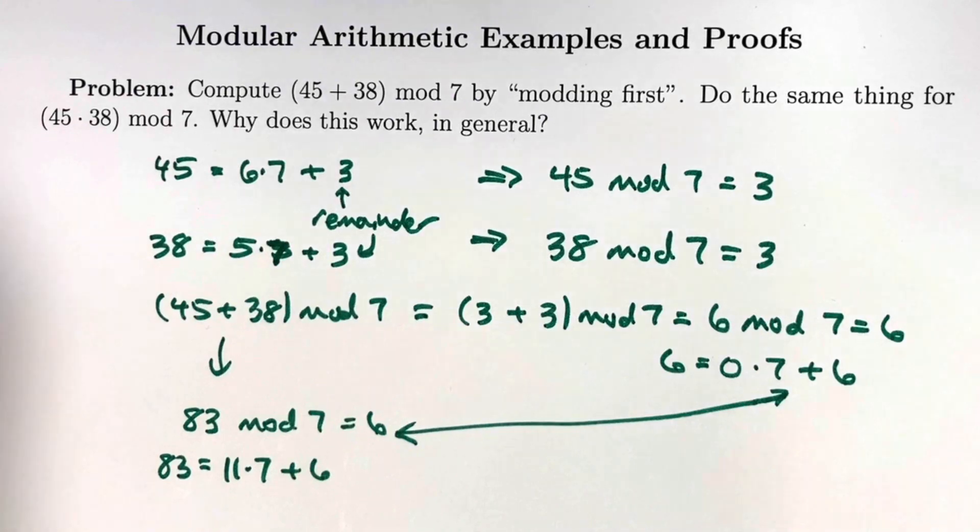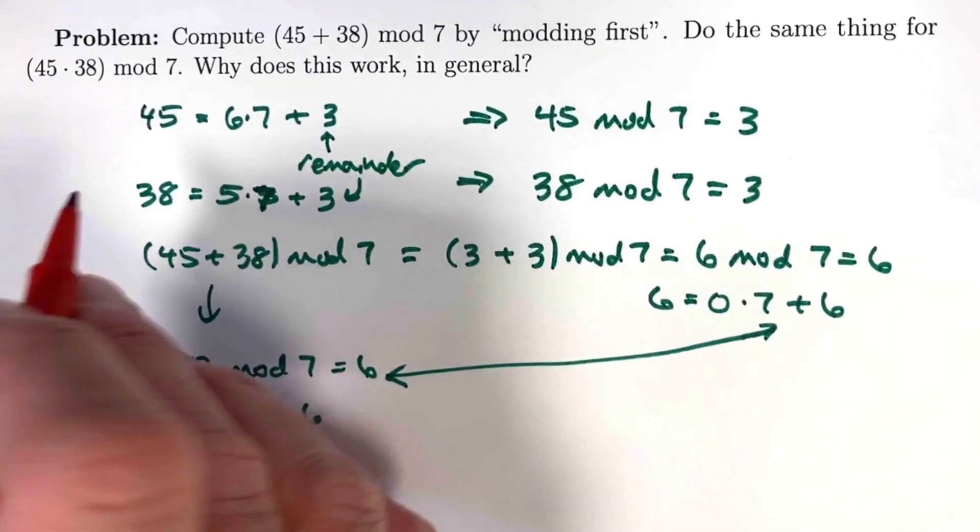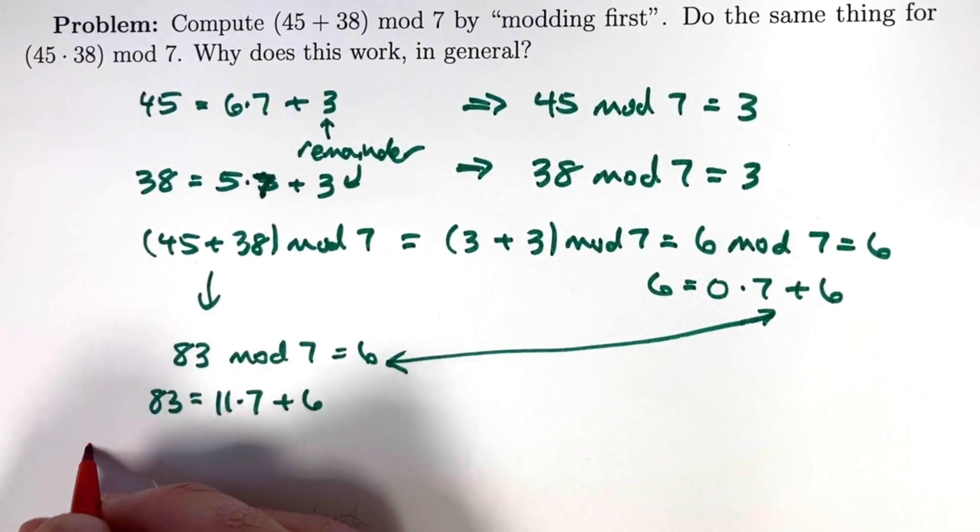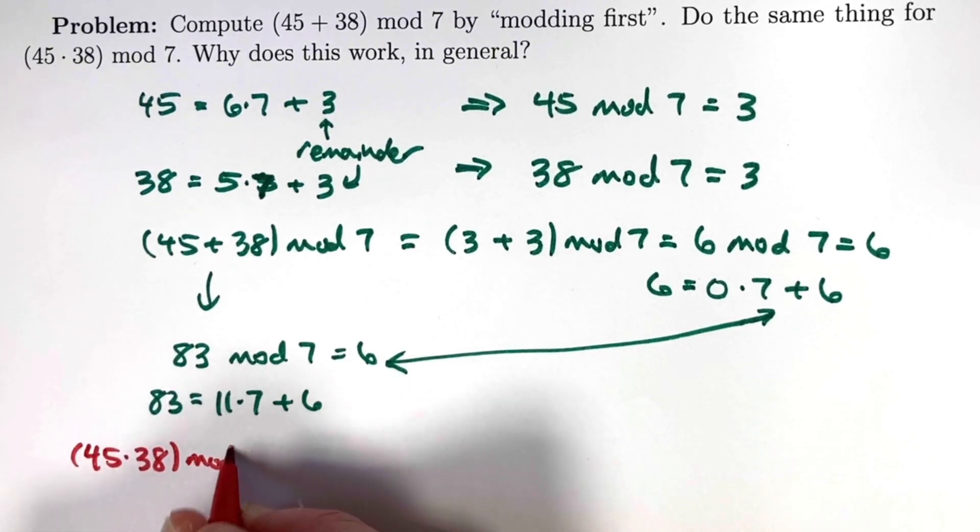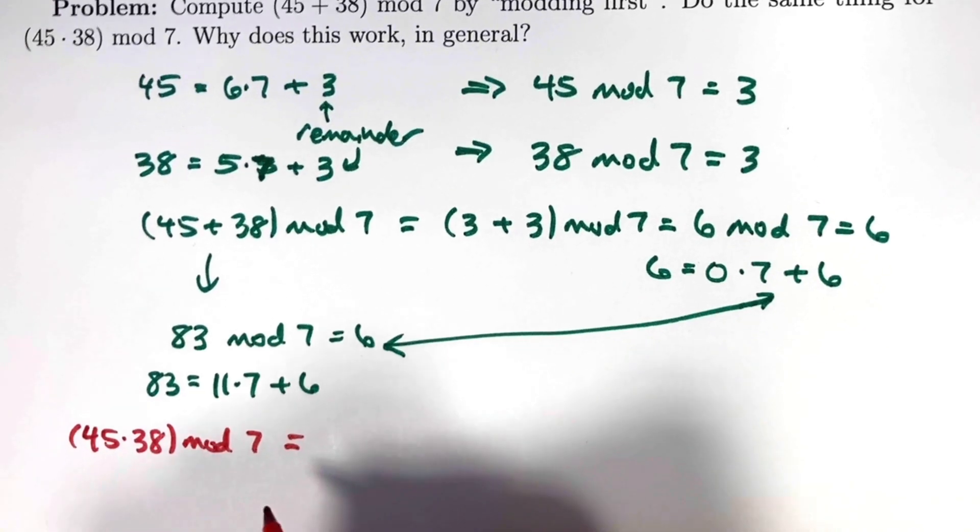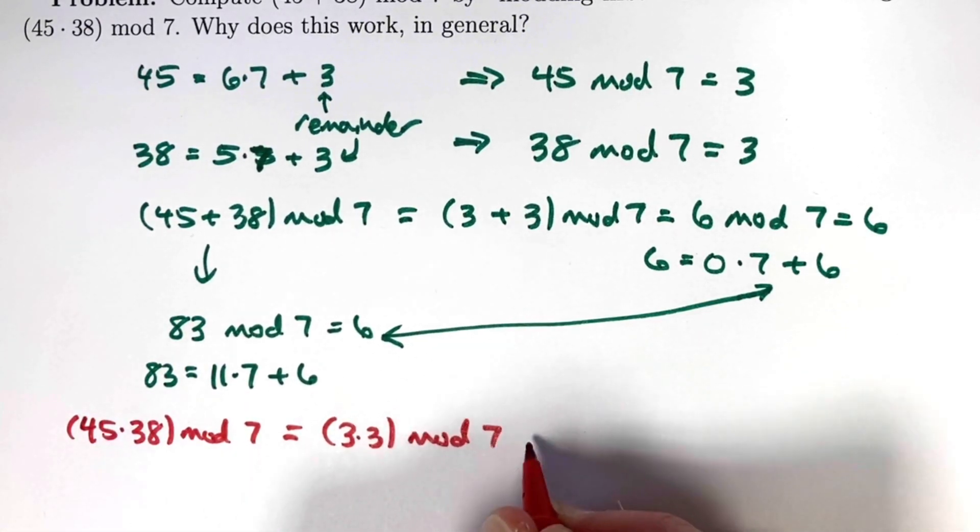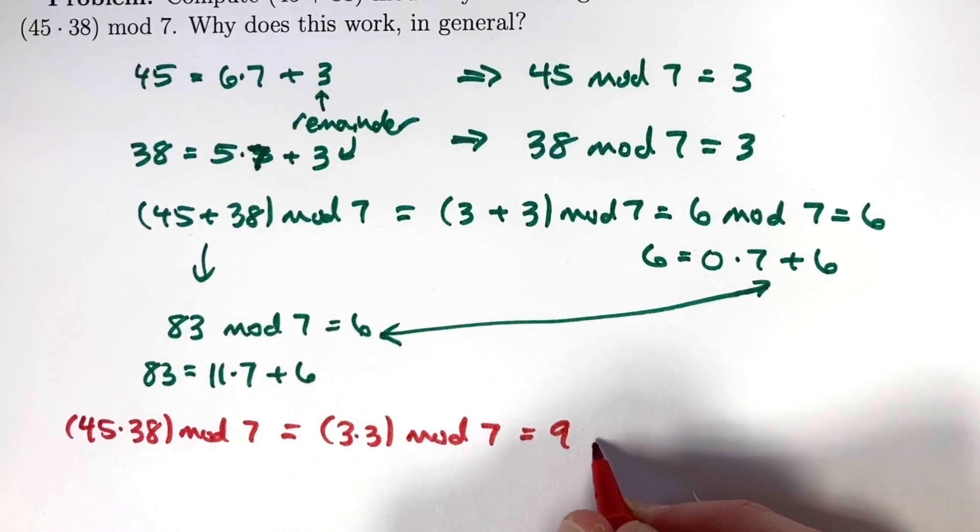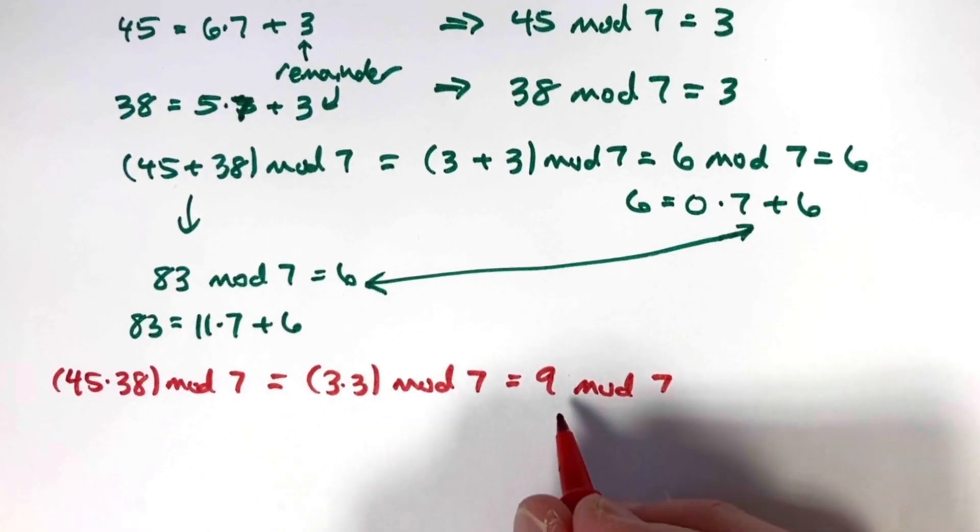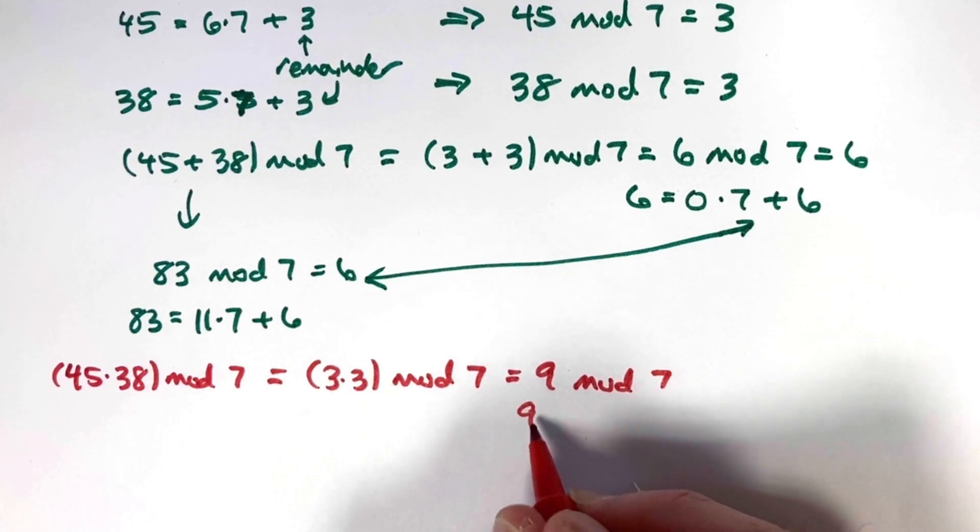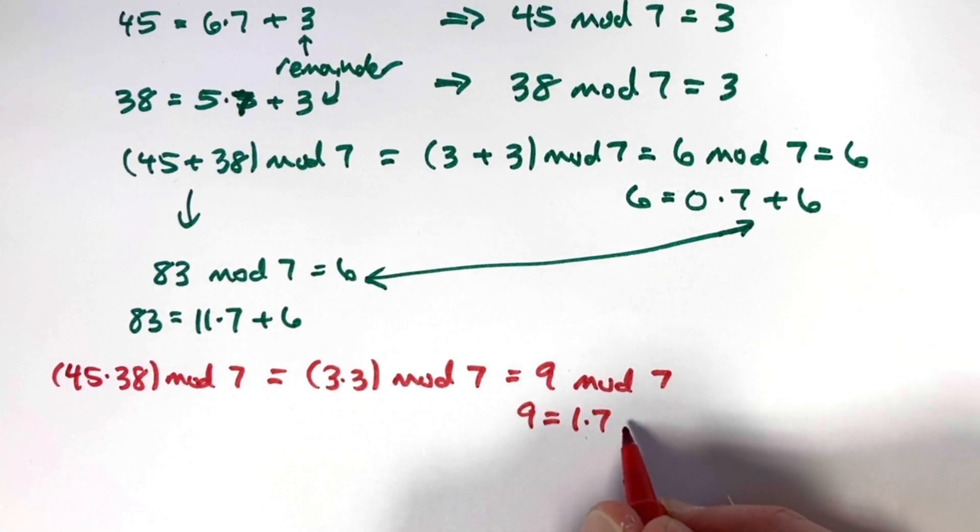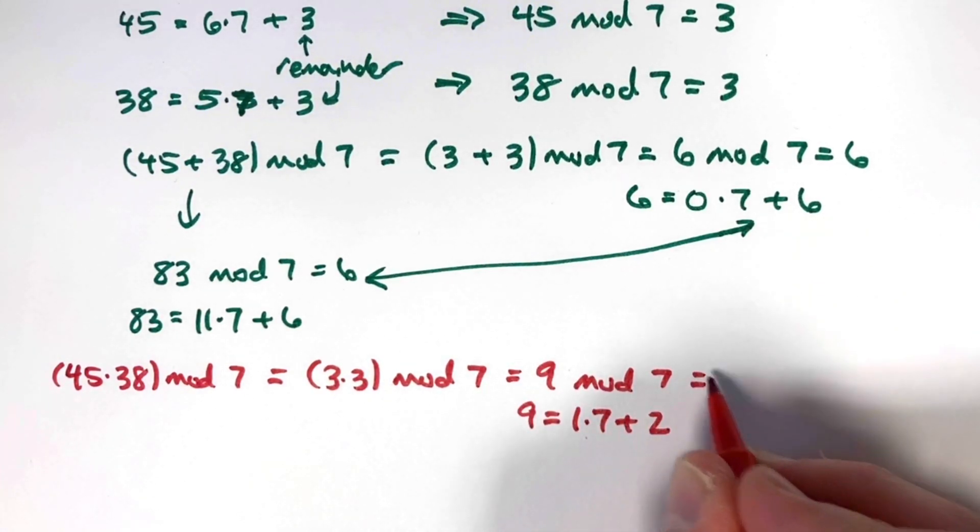Does this work with multiplication? Evidently, it does. Let's do 45 times 38 mod 7. I can mod first. Once again, 45 mod 7 is 3. 38 mod 7 is 3. 3 times 3 is 9. So I ultimately have to compute 9 mod 7. What is the remainder that I get when I divide 9 by 7? The quotient is 1, and the remainder is 2. The answer here is 2.